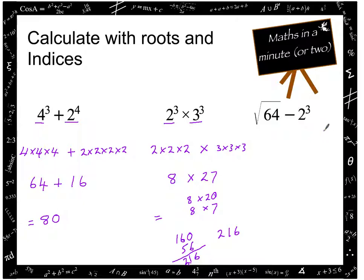And then this last one here has got a root in it. It's exactly the same process. So we're going to square root 64 and square root 64 is 8 because 8 eights are 64.